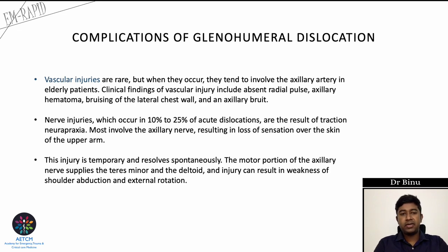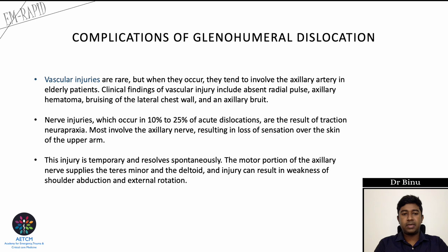Vascular injuries are rare but tend to involve the axillary artery in elderly patients. Clinical findings include absent radial pulse, axillary hematoma, bruising of the lateral chest wall, and an axillary bruit. Nerve injuries may occur in up to 10 to 25% of acute dislocations, mostly traction neuropraxia. The axillary nerve is most commonly involved, causing loss of sensation over the upper arm and weakness of shoulder abduction and external rotation — usually temporary and resolving spontaneously. Other nerves that may be injured include radial, ulnar, median, musculocutaneous, and the brachial plexus.